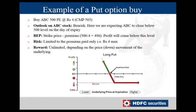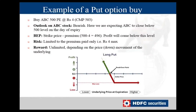The next slide shows a put option buy example. The calculation has the same risk and reward ratio, but because you are buying a put option, you are bearish — expecting the stock to fall. The breakeven is calculated as strike price minus premium. The stock is at 503. You buy a 500 put at 4 rupees. Your risk is limited to 4 rupees. Your breakeven is 500 − 4 = 496. The moment the stock falls below 496, profit begins, and the profit can be unlimited depending on the downside movement of the underlying.